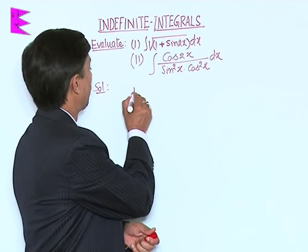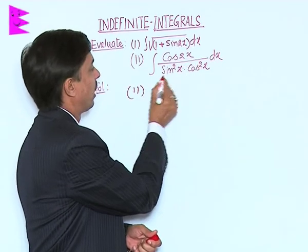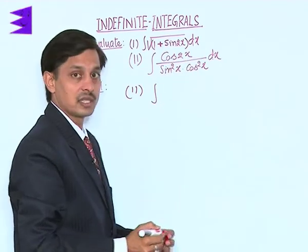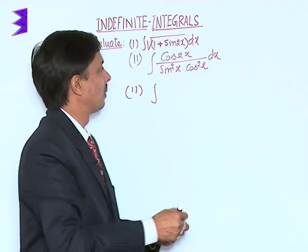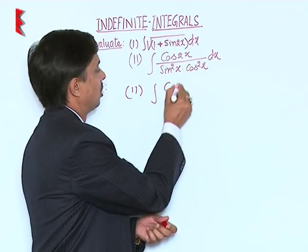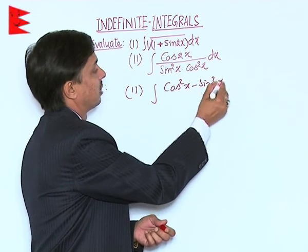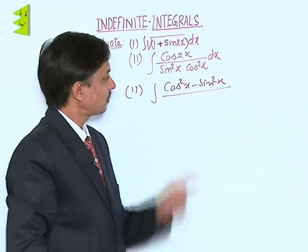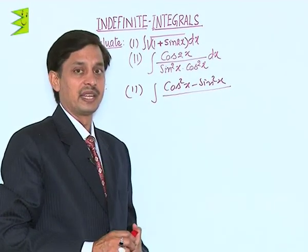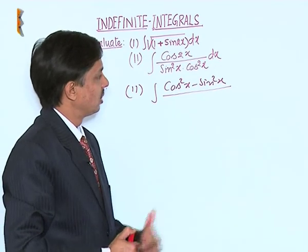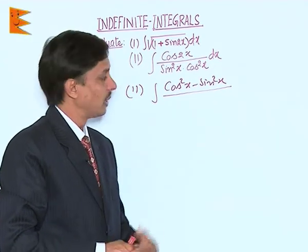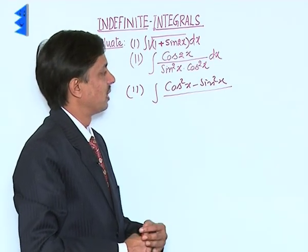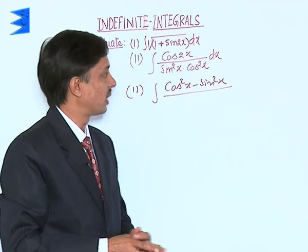The second problem is integration of cos 2x upon sin²x times cos²x dx. In place of cos 2x we can replace it with a suitable formula. There are four values of cos 2x: cos²x minus sin²x, 2cos²x minus 1, 1 minus 2sin²x, and 1 minus tan²x upon 1 plus tan²x.